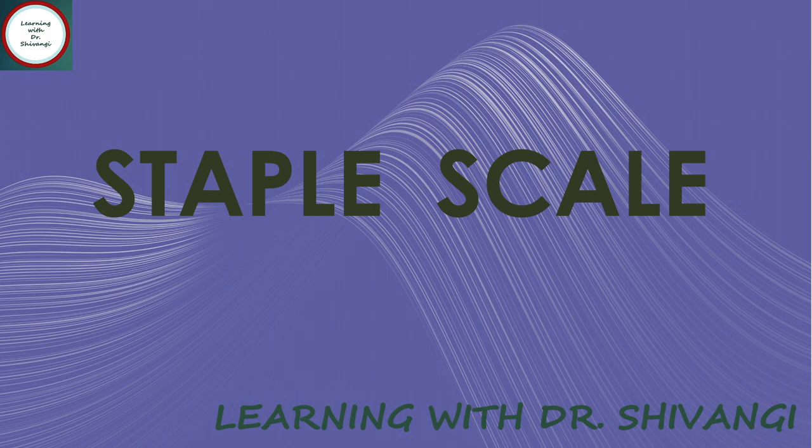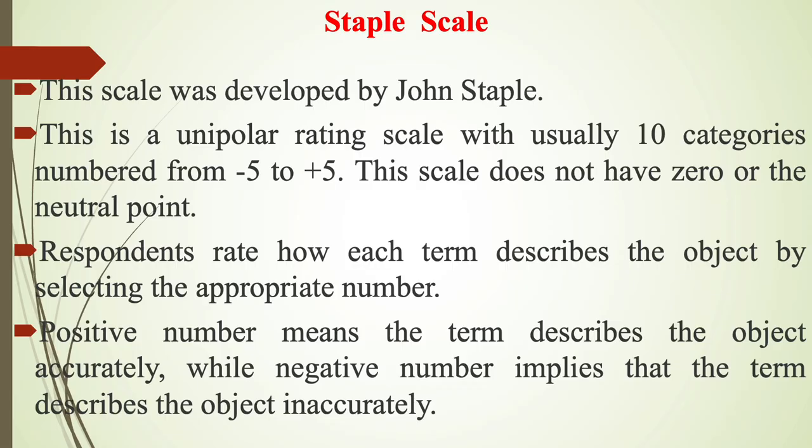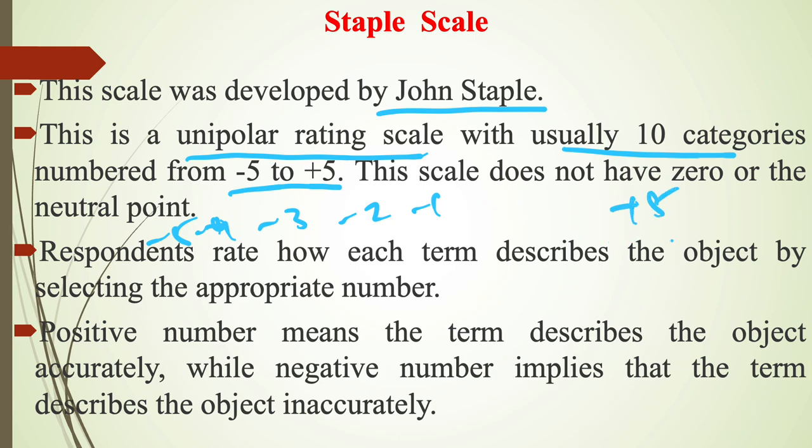Basically this scale is developed by John Staple. This is a unipolar rating scale with usually 10 categories numbered from minus 5 to plus 5. Minus 5, minus 4, minus 3, minus 2, minus 1 up to plus 5. There are 10 categories of scale.